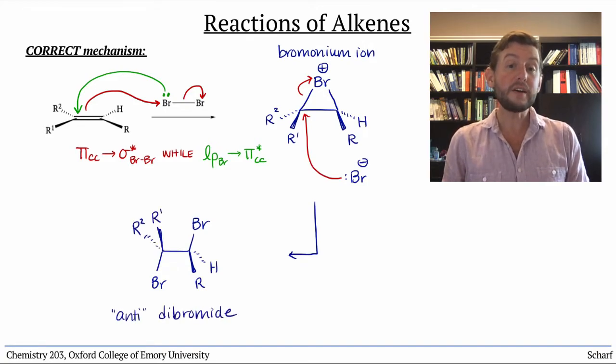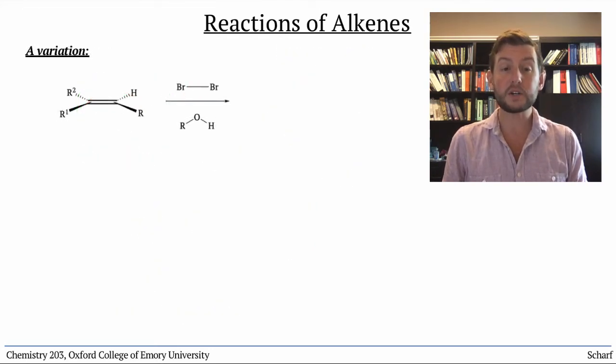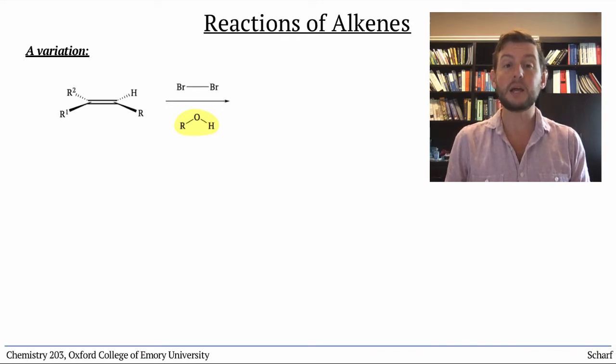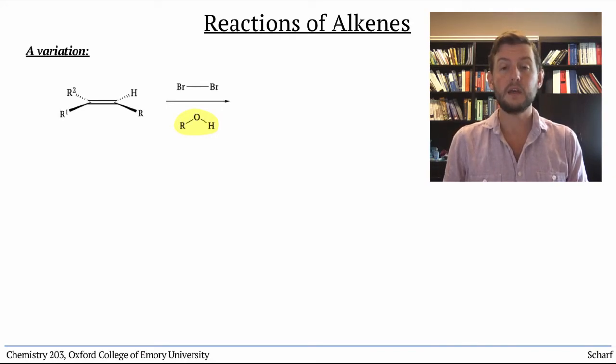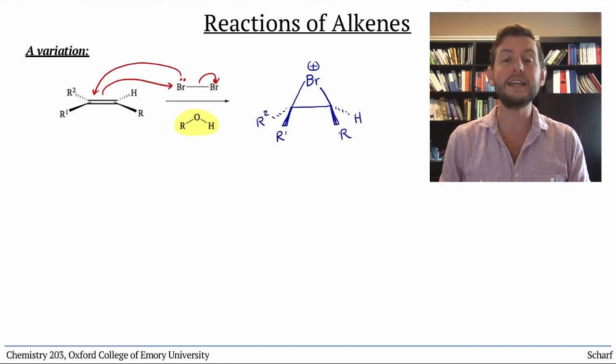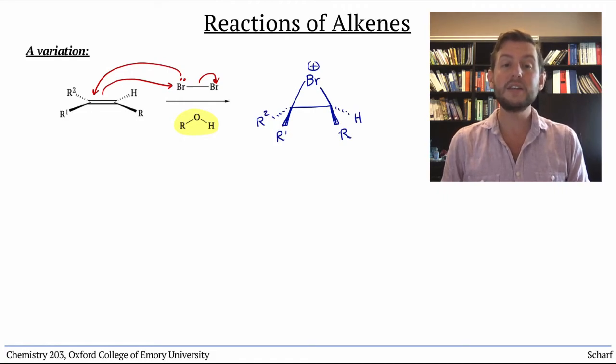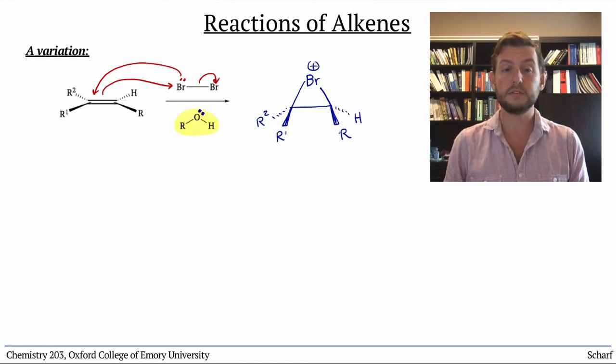There's a variation on this reaction that is quite useful. If we perform it with water or alcohols as solvent, a different type of product is formed. The bromonium ion is formed in the same way, but before the Br- has a chance to swim around and find that σ* CBr orbital, there's another nucleophile available. The lone pairs on the oxygen of the solvent.